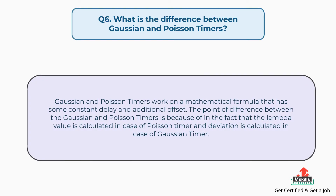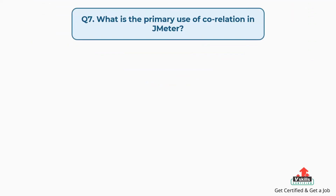Question 6: What is the difference between Gaussian and Poisson timers? Gaussian and Poisson timers work on a mathematical formula with a constant delay and additional offset. The difference between them is that the lambda value is calculated in the case of Poisson timer, while deviation is calculated in the case of Gaussian timer.